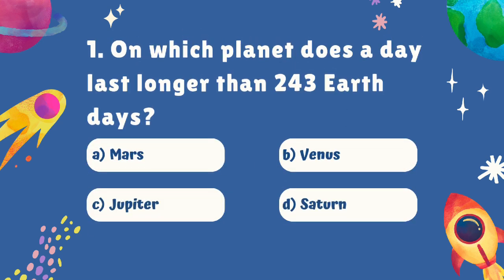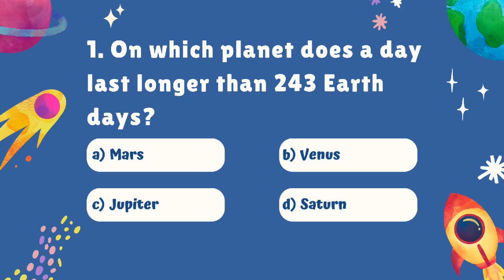Question number one. On which planet does a day last longer than 243 Earth days? Is it A. Mars, B. Venus, C. Jupiter, or D. Saturn? The correct answer is B. Venus.